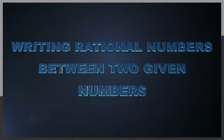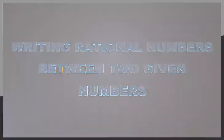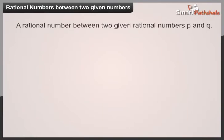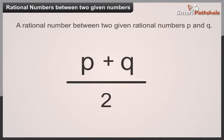Rational numbers between two given numbers. To find a rational number between two numbers P and Q is obtained by adding P and Q and dividing the result by 2.